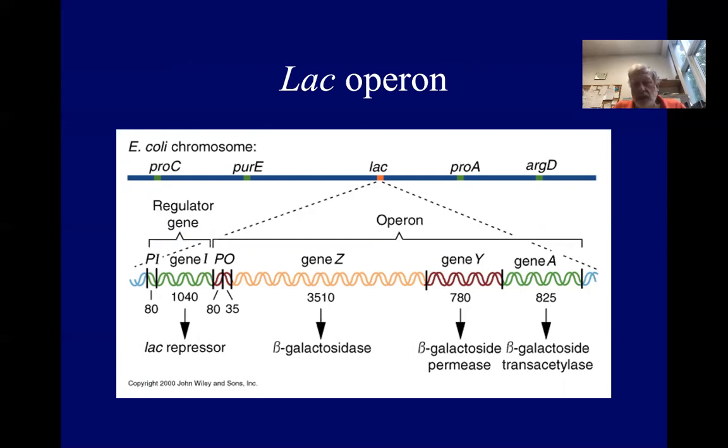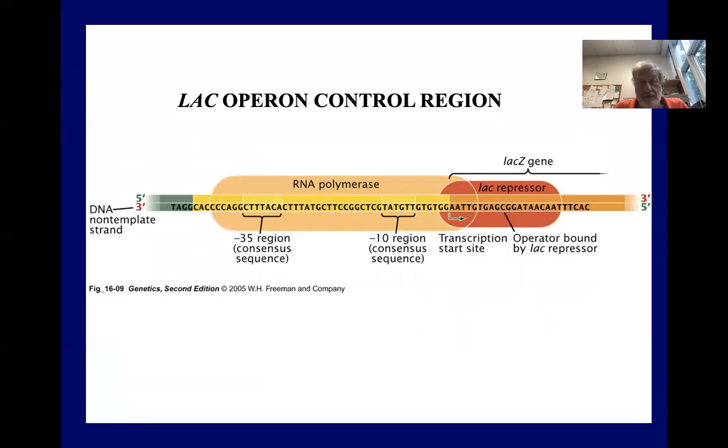And so that's the entire operon. Remember the P promoter, 80 base pairs long, that's the on switch. The operator 35 base pairs long is the off switch, if you will.